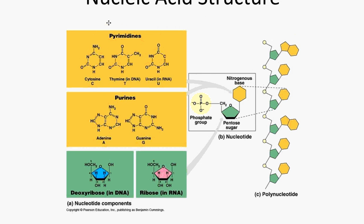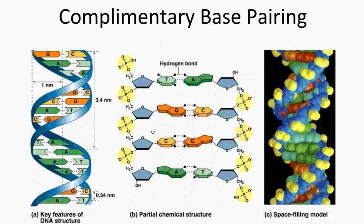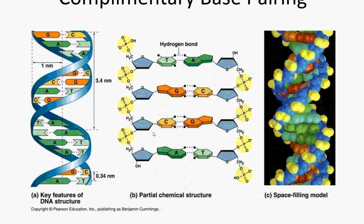DNA also contains a nitrogenous base. For DNA, the nitrogenous base can either be cytosine or thymine as a pyrimidine, or adenine or guanine as a purine. We typically just refer to these as C, T, A, and G. Uracil is another nitrogenous base but it is only found in RNA, and the differences between RNA and DNA we'll get to later.